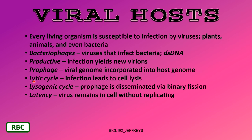There are two main cycles: the lytic cycle, where infection leads to cell lysis — the cell bursts open and dies; and the lysogenic cycle, where the prophage is disseminated via binary fission. The viral genome gets incorporated into the host genome, making a prophage. As that cell divides by binary fission, the prophage gets replicated and each new daughter cell receives a copy of the viral genome, and so on.